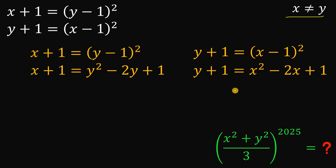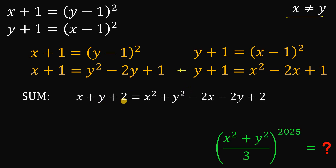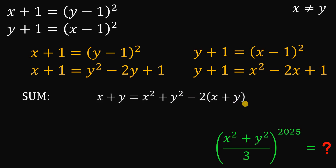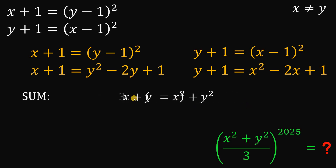The trick to answer this is that since the two equations look the same except for the variable, why not try to get their sum and difference? Let's get their sum first. Adding these two results, we get x plus y plus 2 equals x squared plus y squared minus 2x minus 2y plus 2. If we subtract 2 on both sides, those cancel to 0. Then we factor out negative 2 from those two terms, and add 2 times x plus y on both sides. So we get 3 times x plus y equals x squared plus y squared.